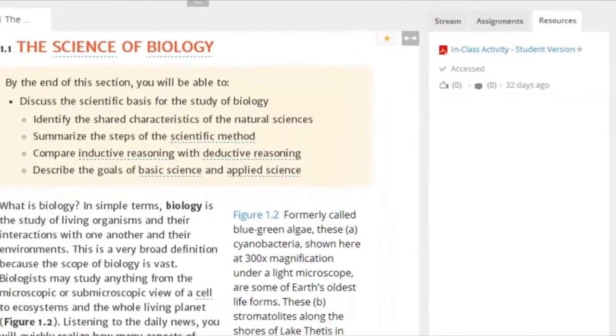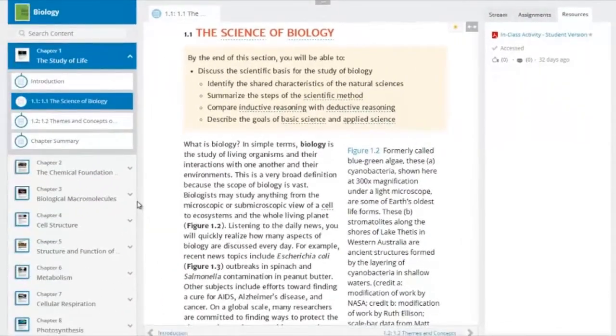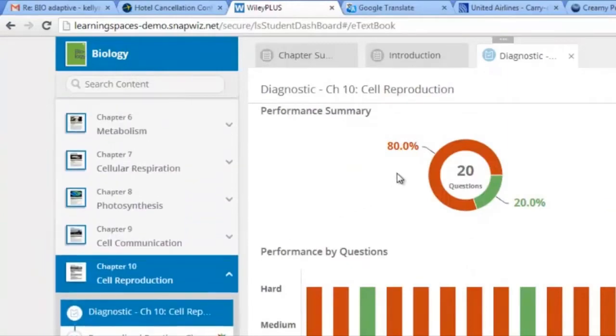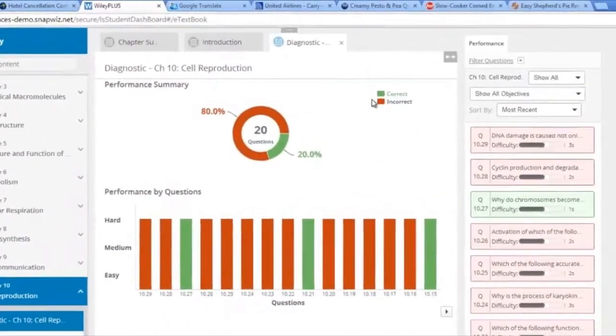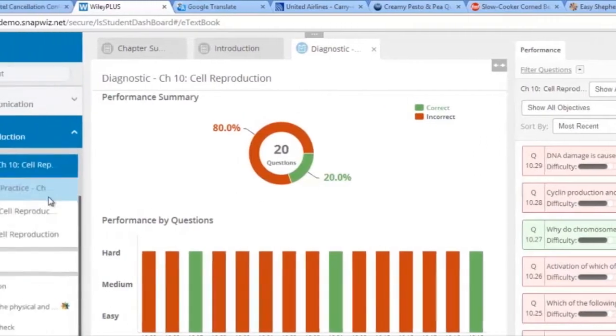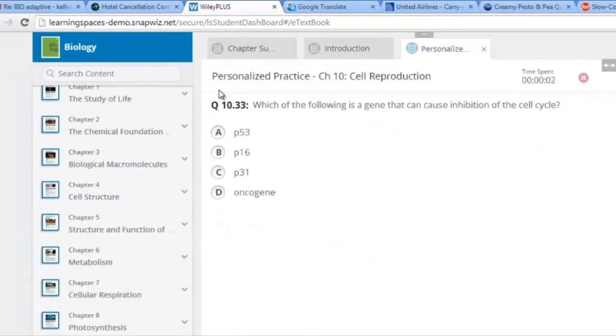Each topic in Bio Principles includes adaptive practice sets for students. Students can complete a chapter level diagnostic to determine their baseline proficiency on topics and to help point out areas where students may need to spend more time. Students can then work on the adaptive practice sets to build their proficiency as they respond to questions at an appropriate level of difficulty for each student and gradually be challenged with more difficult questions as they build that proficiency.